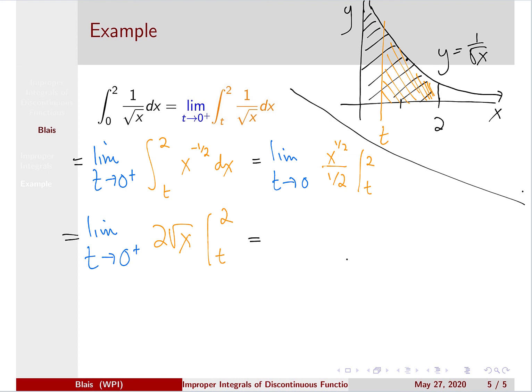Or, the limit as t goes to 0 plus, we evaluate, we have 2√2 minus 2√t. Plugging in top and bottom. Now, we know as t approaches 0 from the right, the square root of t is approaching 0. So this term is approaching 0, and this term is a constant. And so the answer is 2√2.